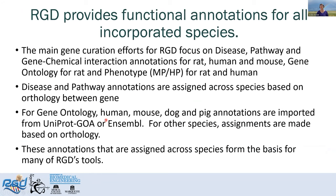RGD also provides functional annotations for all of the incorporated species. The main gene curation efforts for RGD focus on gene pathway and gene chemical interaction annotations for rat, mouse, and human. Gene Ontology for rat, and phenotype — that's mammalian phenotype and human phenotype — for rat and human respectively. The disease and pathway annotations are assigned across species based on orthology between genes. For the Gene Ontology, human, mouse, dog, and pig annotations are imported from UniProt GOA or Ensembl, and for other species assignments are made based on orthology.